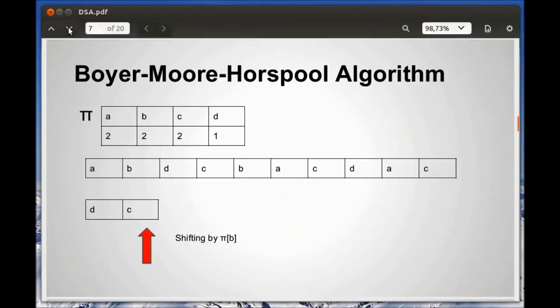Now let's go through an example where this algorithm highlights its pros. We will initialize the table, namely π, with all positions having the length of the pattern. This is because when a character is encountered that does not occur in the pattern, we can safely shift by its length. Then we update the positions for D and C, which are the symbols in the pattern, with 1 and 2.